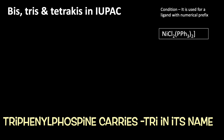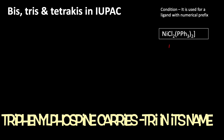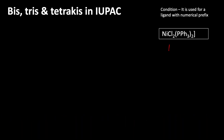So let us go to write the name. For that, how is the triphenylphosphine formed? First, let us write the phosphine structure — it is PH₃. When hydrogen is replaced by a phenyl group, we get PPh₃. That means triphenylphosphine.